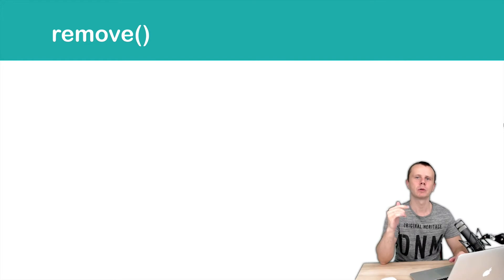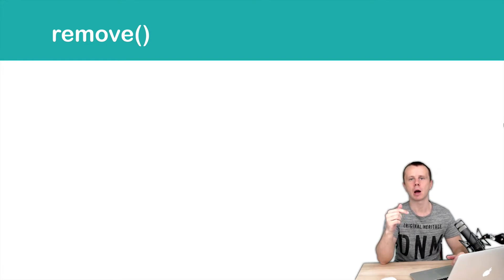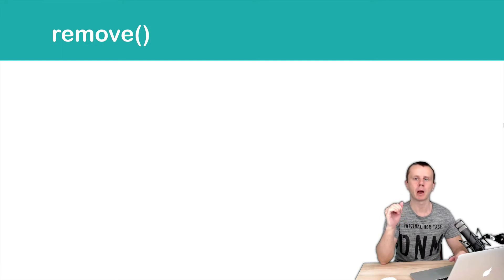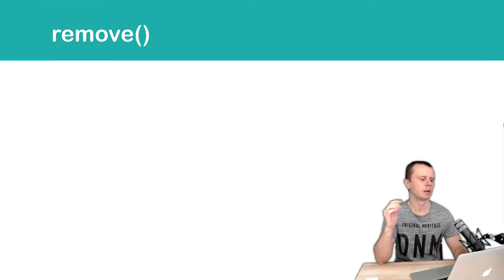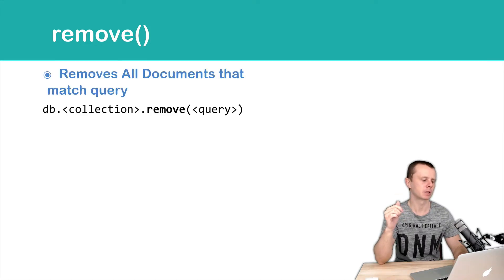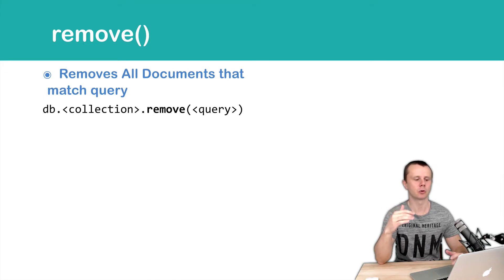Let's start with the remove method. With this, you can remove either one document or all documents that match a specific query. Let's look at the syntax: just db, then collection name, and then remove.